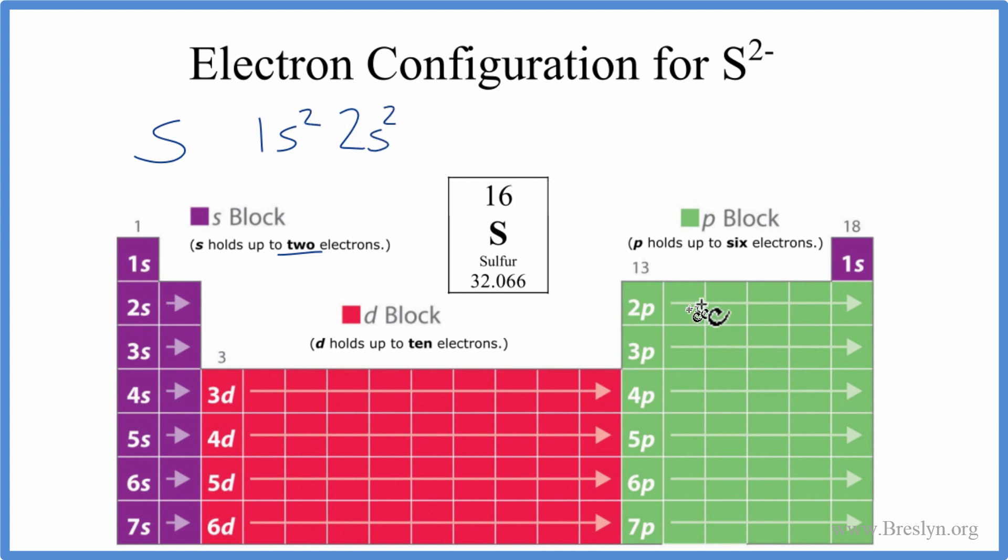From the 2s, we go to 2p. 2p can hold up to 6. So we'll put 6 in here. Now we've used 10. Then 3s2, that's 12, and we need 16.